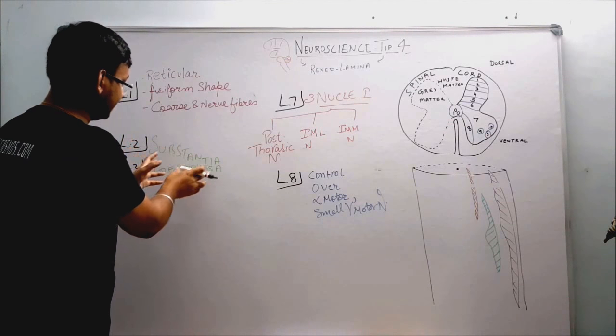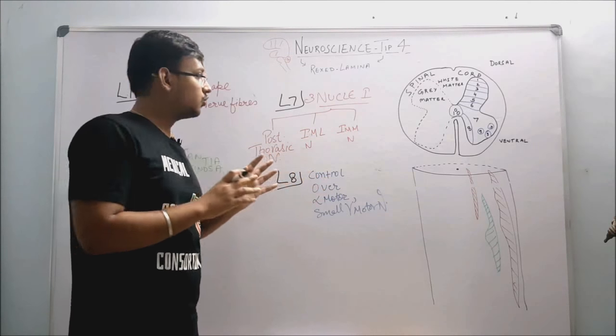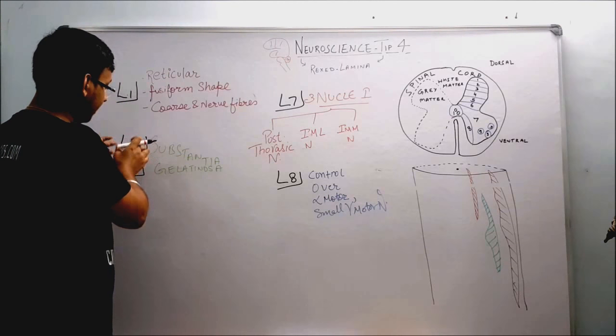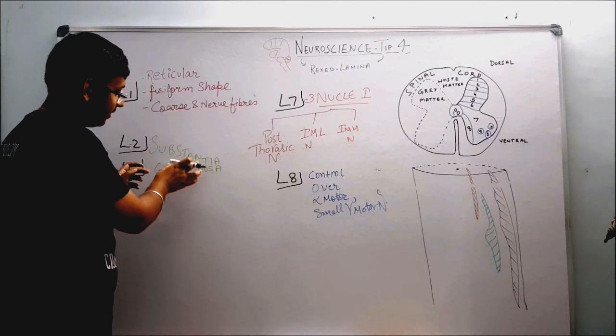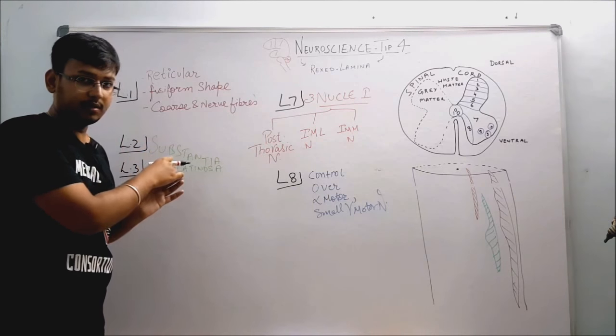Similarly, in lamina 2 and lamina 3, we share the substantia gelatinosa. So this is one nuclear system in the spinal cord. In lamina 2 and lamina 3, we have approximately part of substantia gelatinosa in both. So this is important to know to locate certain spinal cord injury data.